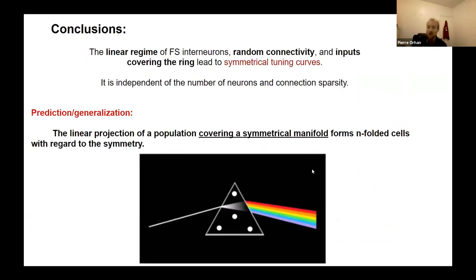So to conclude, the linear regime of fast-spiking interneurons, random connectivity, and inputs covering the ring led to symmetrical tuning curves. It was independent of the number of neurons and connection sparsity. We can now make a prediction and generalize this statement. The linear projection of a population covering a symmetrical manifold, we had a ring, could be a torus, anything with symmetry, forms folds with regard to the symmetry.